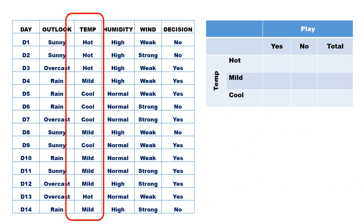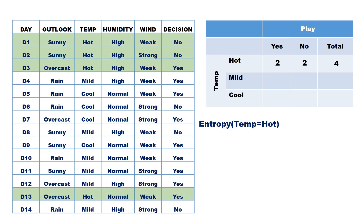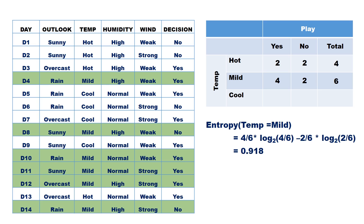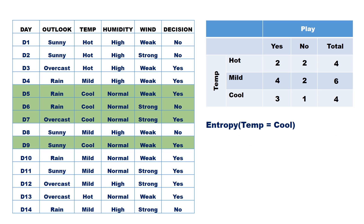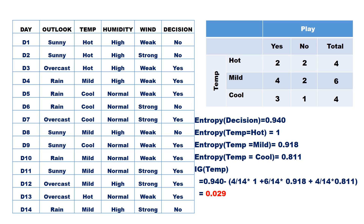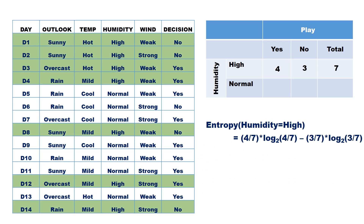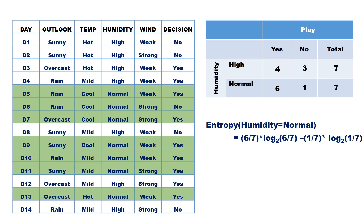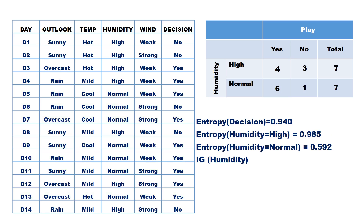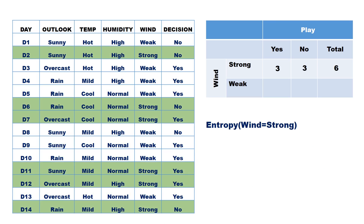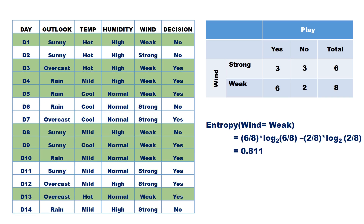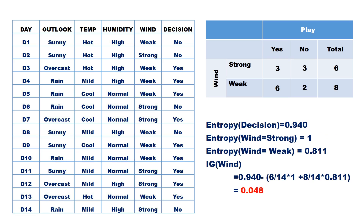Similarly, we compute the information gain for attribute temperature. Entropy of temperature equal to hot is 1, entropy of temperature equal to mild is 0.918, and entropy of temperature equal to cool is 0.811. Information gain for temperature is 0.029. For humidity: entropy of humidity equal to high is 0.985, entropy of humidity equal to normal is 0.592, and information gain for humidity is 0.151. For wind: entropy of wind equal to strong is 1, entropy of wind equal to weak is 0.811, and information gain for wind is 0.048.